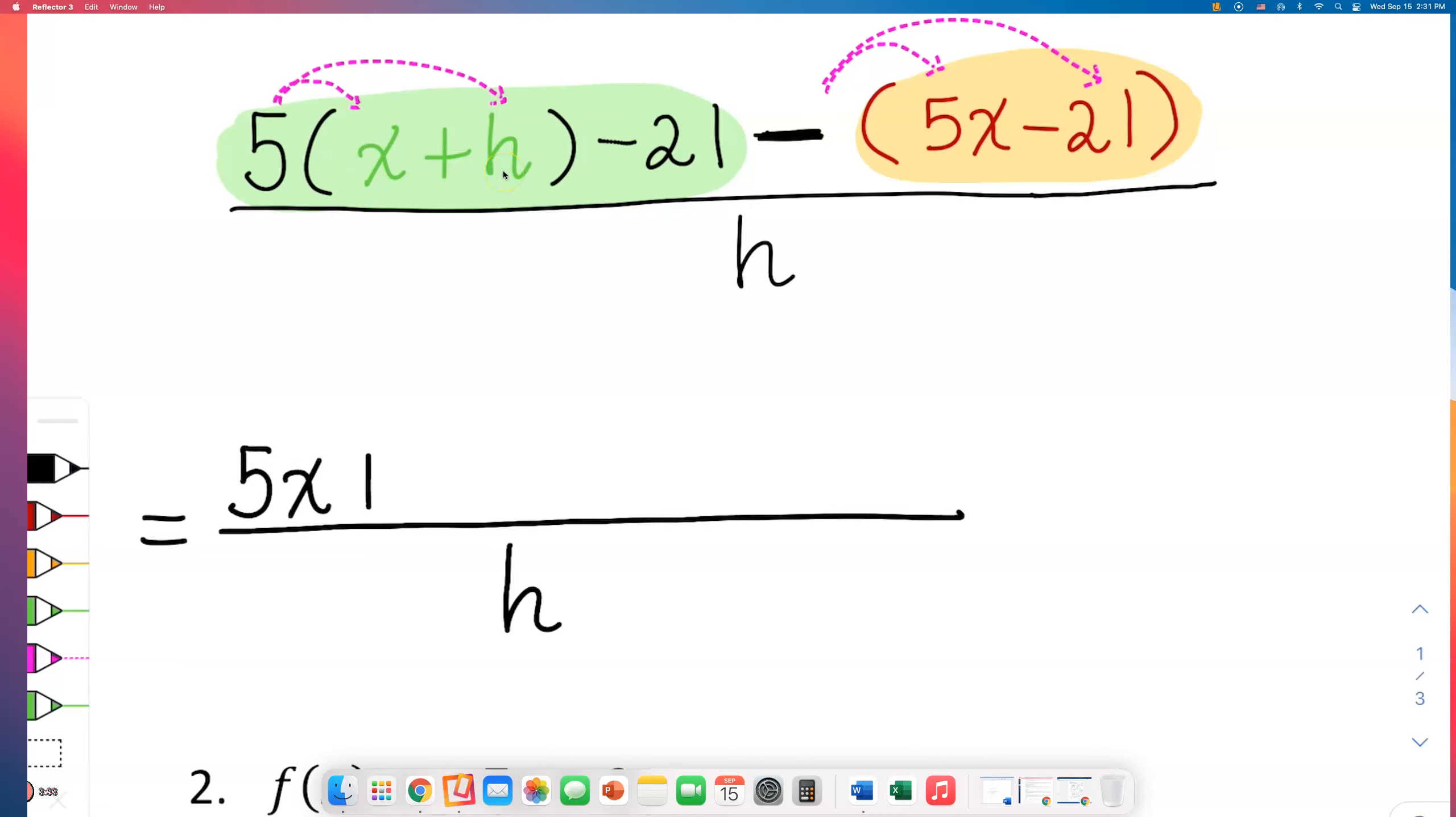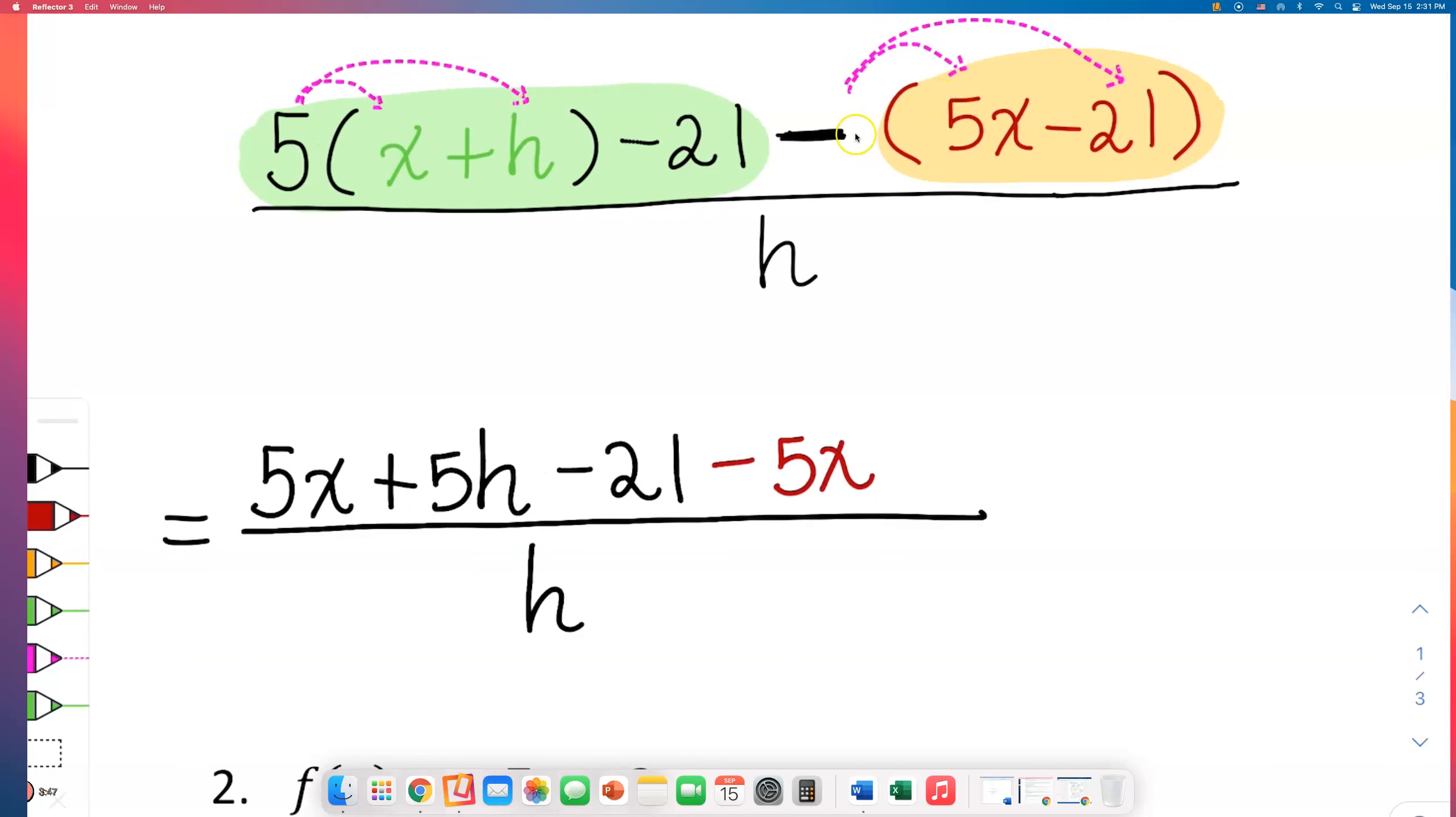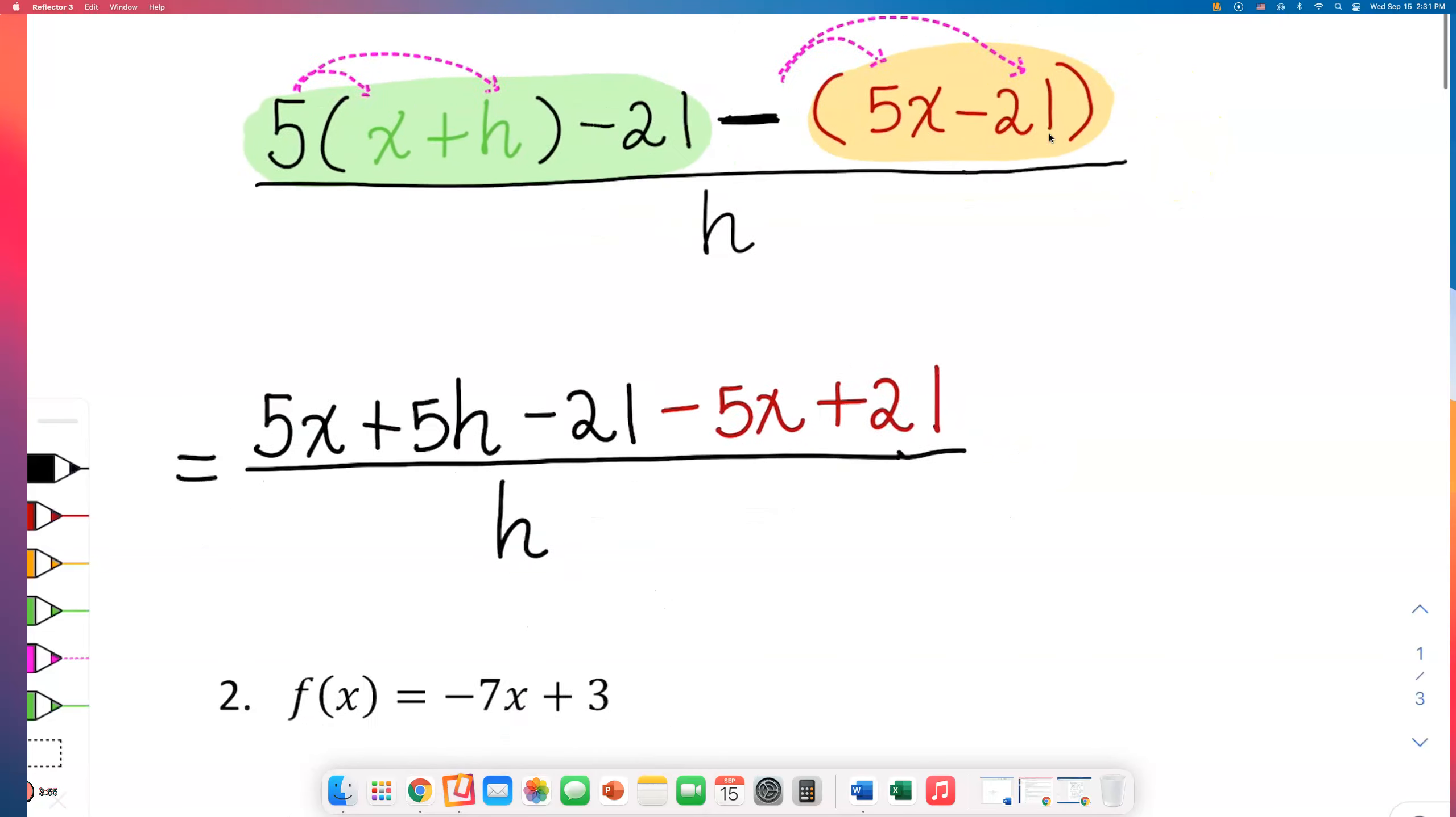Let us distribute 5 to x plus h. x plus h will turn into 5x plus 5h and bring down that minus 21. Look, I have to distribute this negative sign. That will turn into minus 5x, and negative times negative 21 is positive 21.